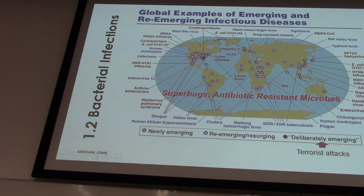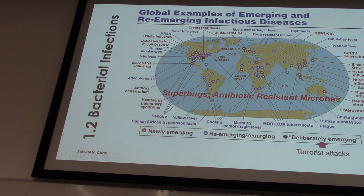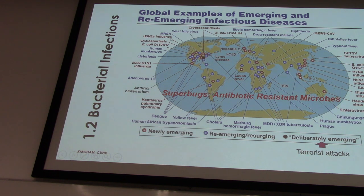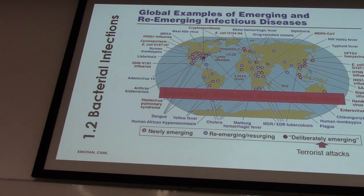These are mainly what we call pathogens from infectious disease. Due to global warming, microorganisms that were found in Africa can now also be found in America or North America. This WHO data summarizes different chemicals and pathogens — some are new, some are old. Influenza is always a concern; drug-resistant Salmonella is always a concern; we have E. coli and so on. Recently, super antibiotic-resistant microorganisms are also a major concern.